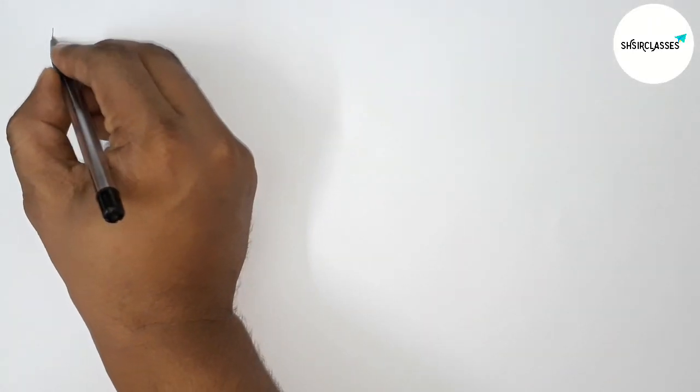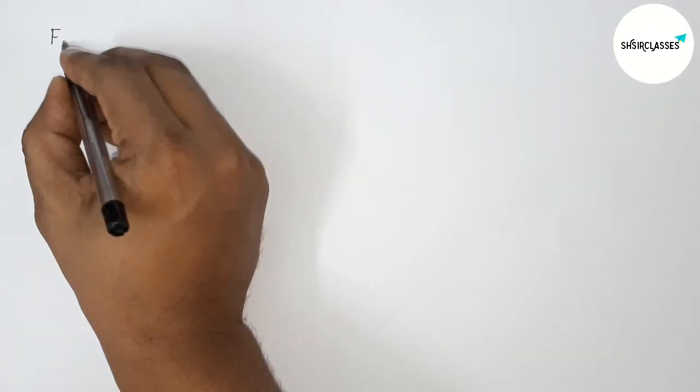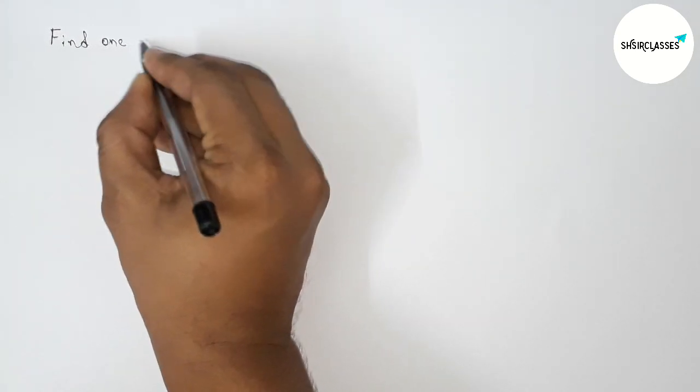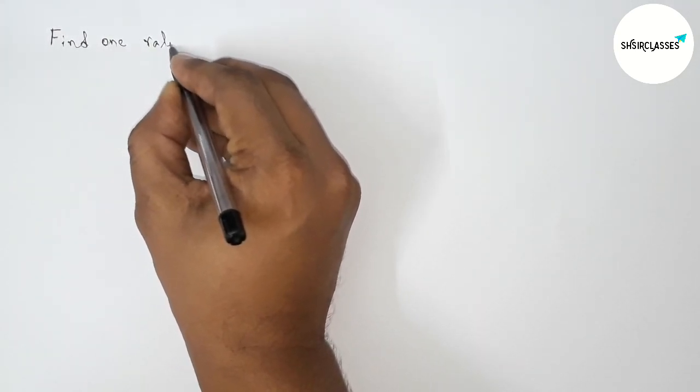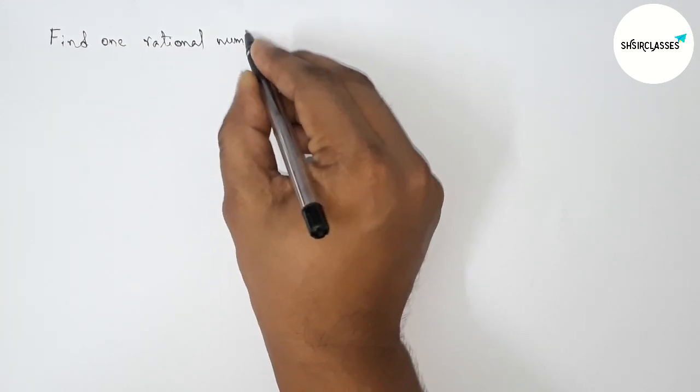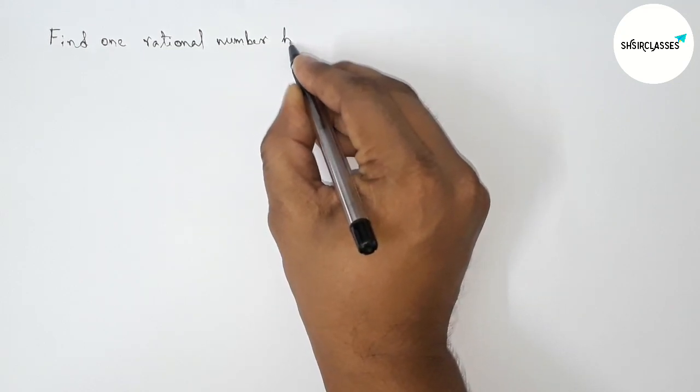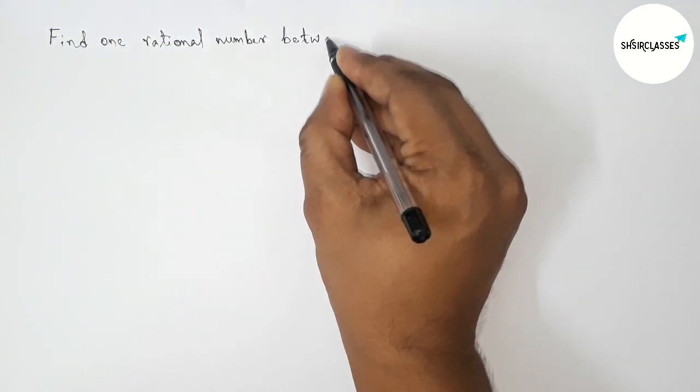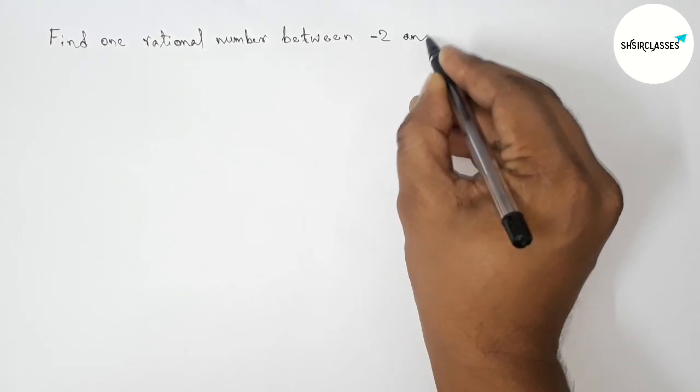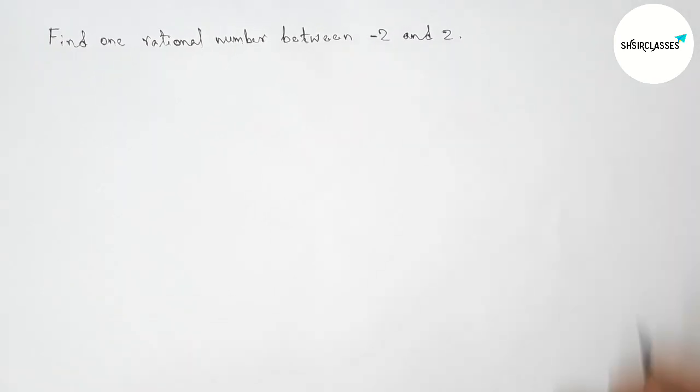Hi everyone, welcome to Scishare Classes. Today in this video we have to find one rational number between -2 and 2 in an easy way. Please watch the video till the end. Let's start the video.